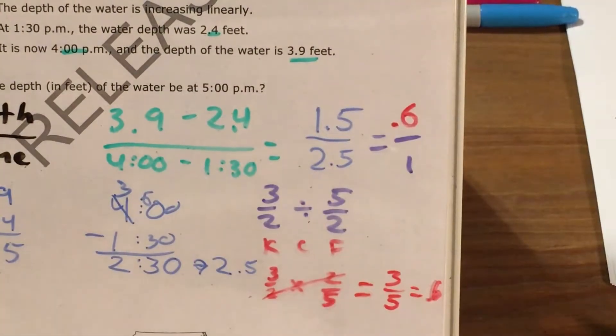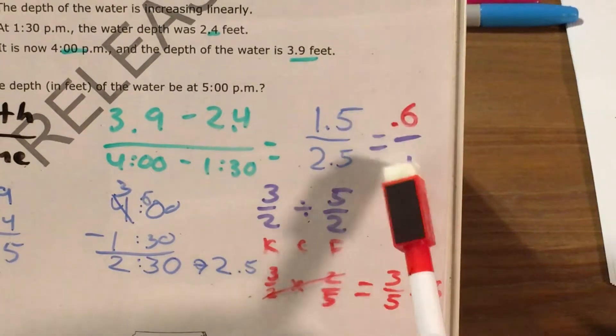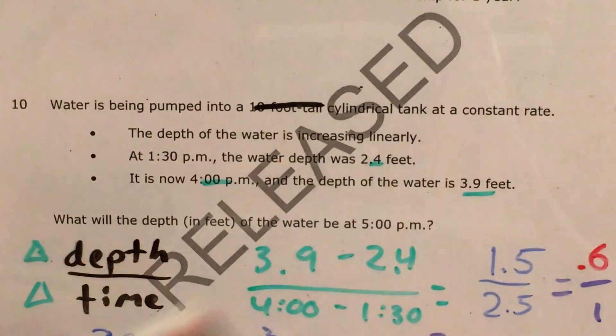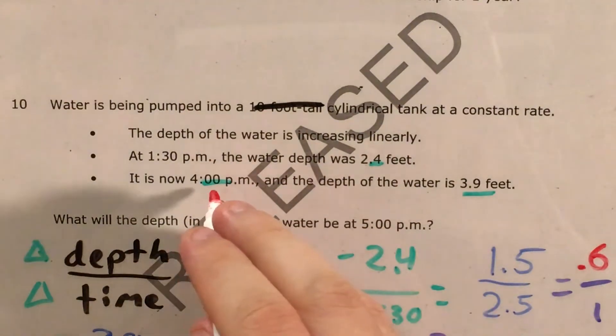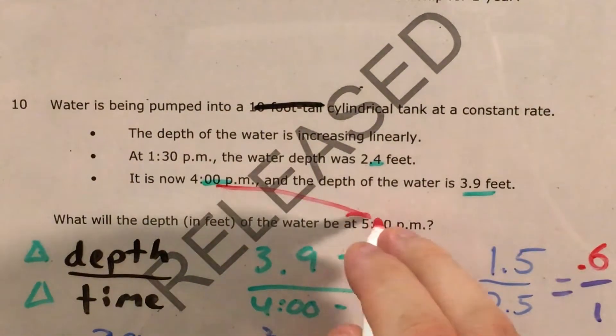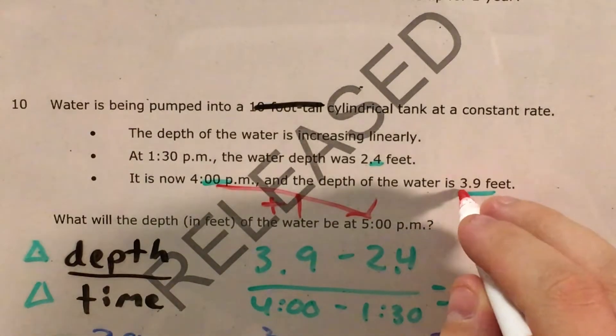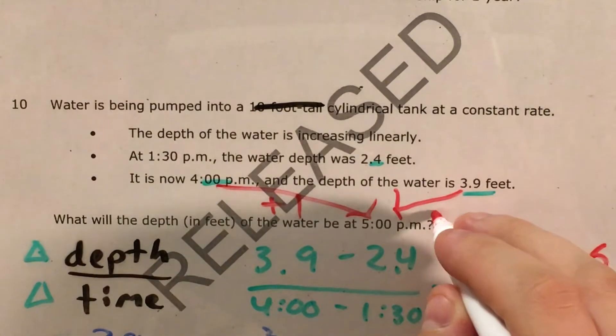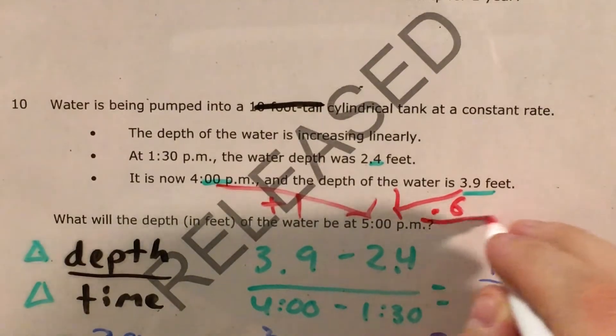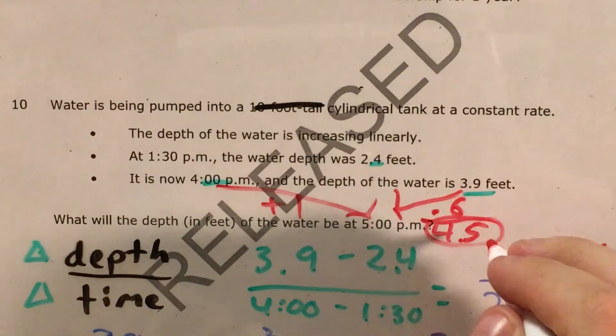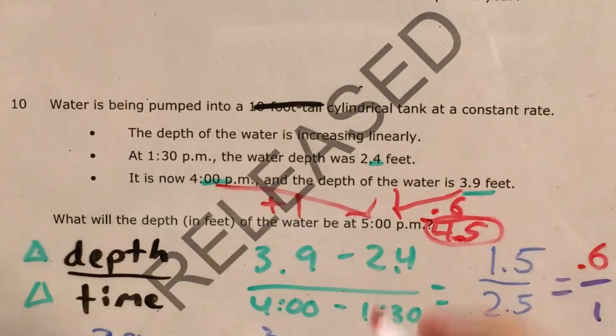So if I have a rate of change fraction, that's 6 tenths of a foot for every 1 hour. So now I need to go back to the actual words in my word problem and I'm going to say that if I go from 4 o'clock to 5 o'clock and add 1 hour to get from 3.9 feet to whatever that depth is, I need to add 6 tenths. And 3 and 9 tenths plus 6 tenths is going to get me 4 and 5 tenths.